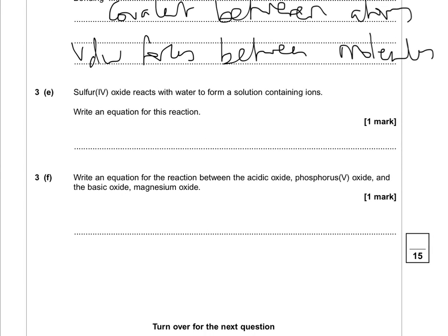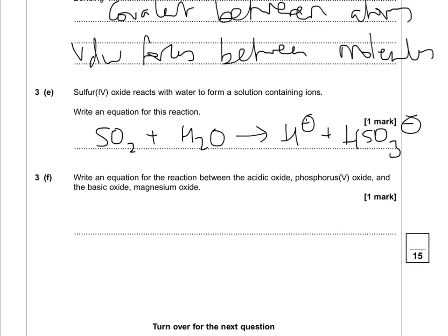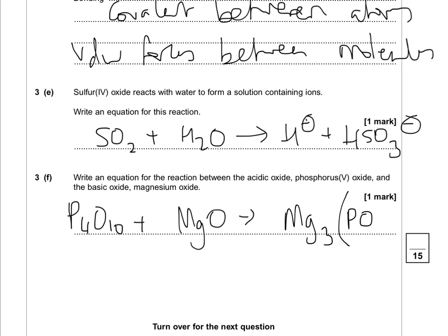Sulfur(IV) oxide reacts with water to form a solution containing ions. Write an equation: SO₂ + H₂O → H⁺ + HSO₃⁻. Then write an equation for the reaction between the acidic oxide phosphorus(V) oxide and the basic oxide magnesium oxide. You've got P₄O₁₀ + MgO. You're going to make magnesium phosphate, which is Mg₃(PO₄)₂, because magnesium has a 2+ charge and phosphate has a 3− charge — so you need two phosphates. To balance: 2P₄O₁₀ + 6MgO, and that is balanced.